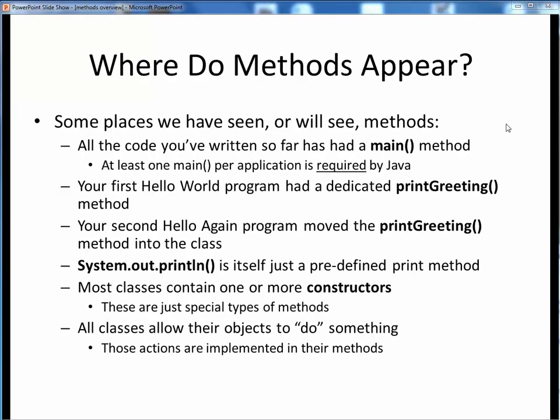Well, it turns out that we've already seen and used methods in some recent programs we've written, though we might not have identified them as such. For starters, every program we've written so far has had a main method, and as we said earlier, every Java application requires there to be at least one such main method. In your first Hello World program, there was a dedicated printGreeting method to print out a friendly greeting to you by name. And in your second Hello Again program, that method got moved into the supporting Hello class.